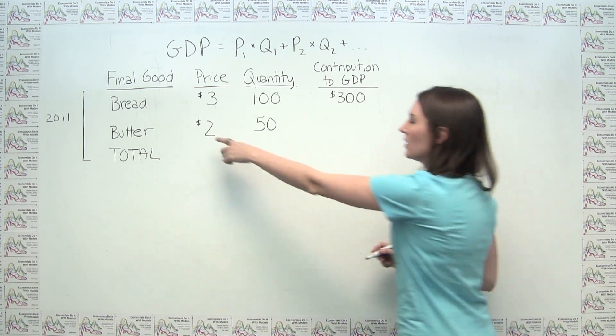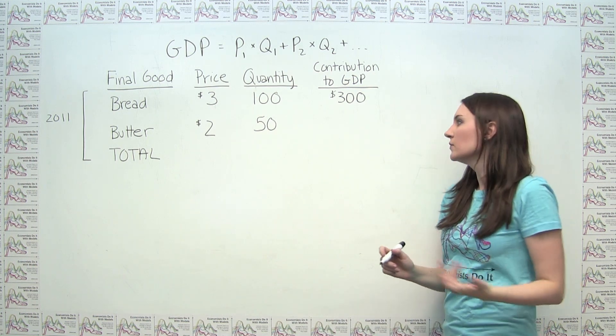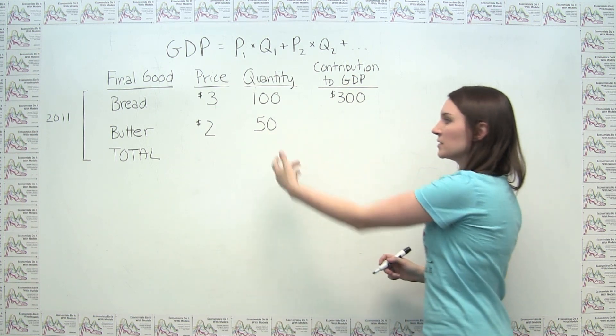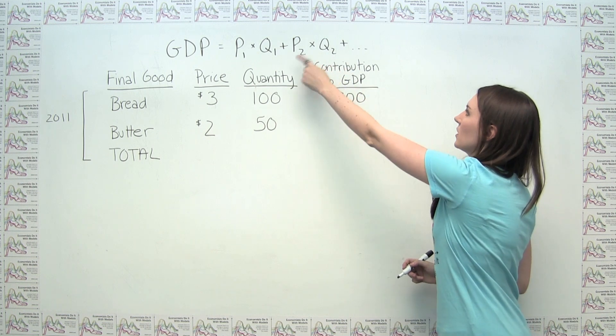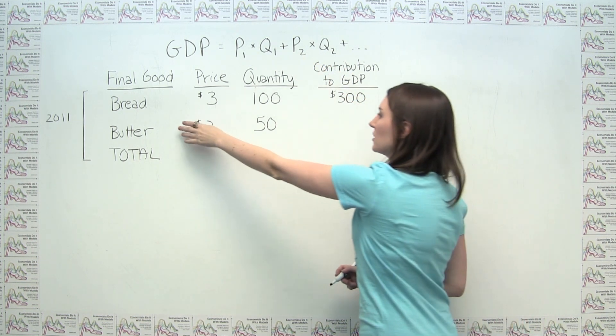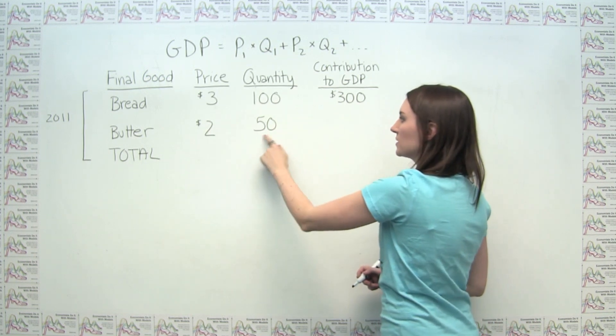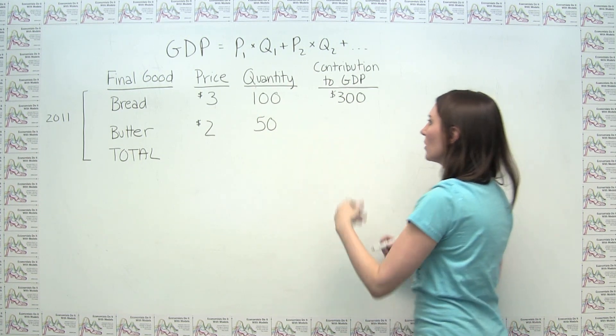Similarly, if butter is selling at $2 a unit, and we're selling 50 units of butter, then that's going to be our Q2 and our P2 here. And we can say that butter's contribution to GDP is just $2 times 50, or $100.